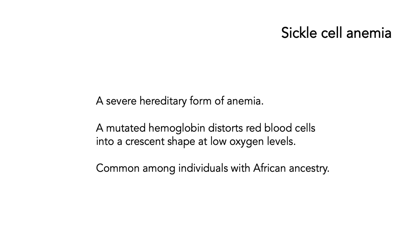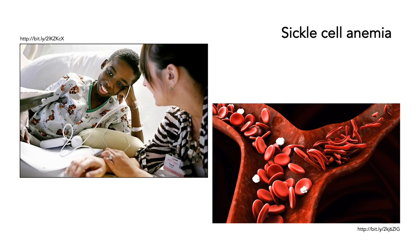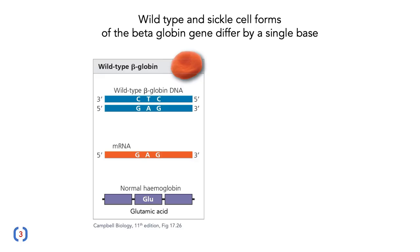Let's look at sickle cell anemia as an example of a disorder where we need restriction endonucleases. Sickle cell anemia is a severe hereditary form of anemia where a mutated hemoglobin distorts red blood cells into a crescent shape at low oxygen levels, so you can't get enough oxygen into your blood. It's very common amongst individuals with African ancestry and is a much bigger problem in parts of sub-Saharan Africa where good healthcare isn't available. On the picture, you can see some sickle cells forming — they differ from the normal flattened coin shape of healthy red blood cells.